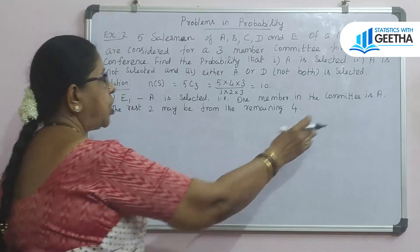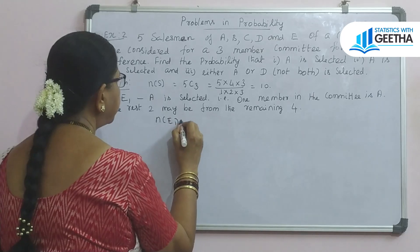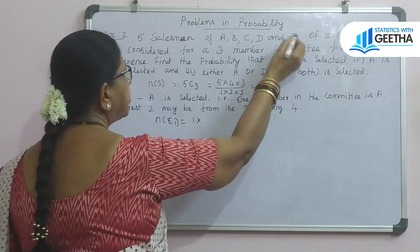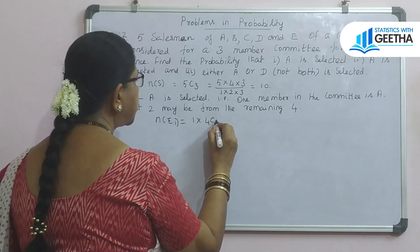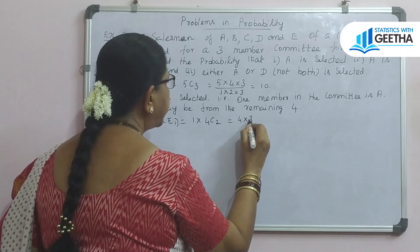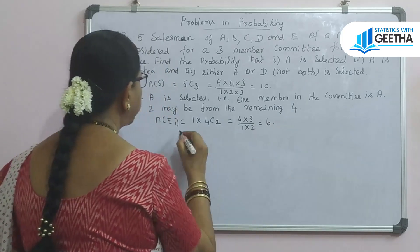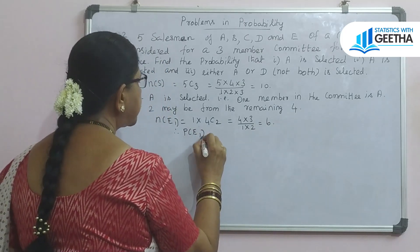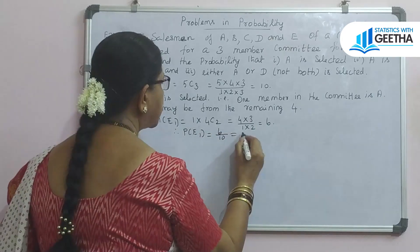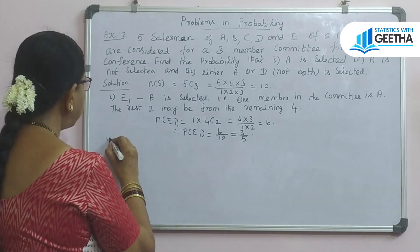For subdivision 1, find the probability that A is selected. N of E1 is 1 times 4C2. Simplifying 4C2 gives 4 times 3 divided by 1 times 2, which equals 6. Therefore, the probability of E1 is 6 divided by 10, which simplifies to 3 by 5.